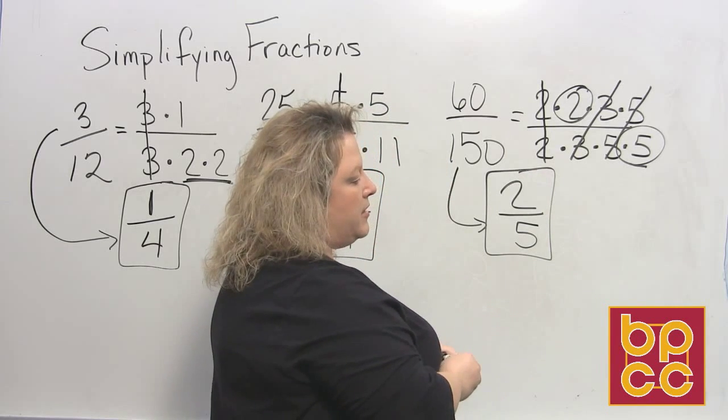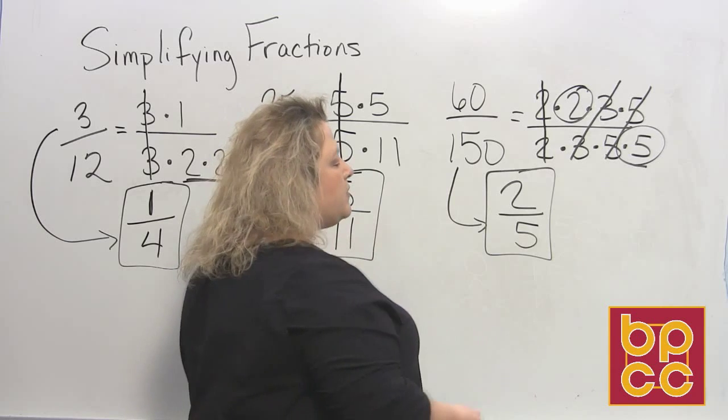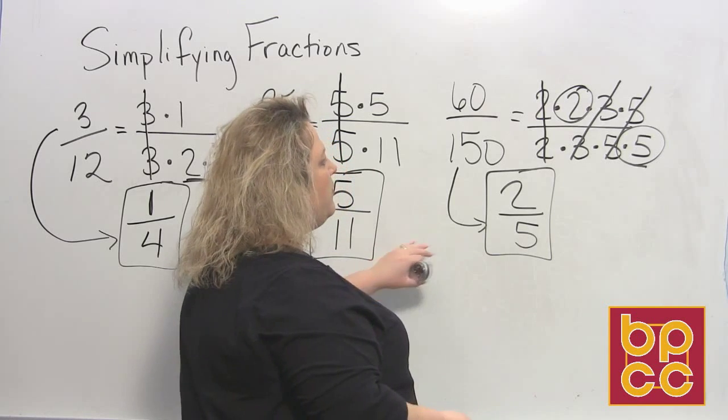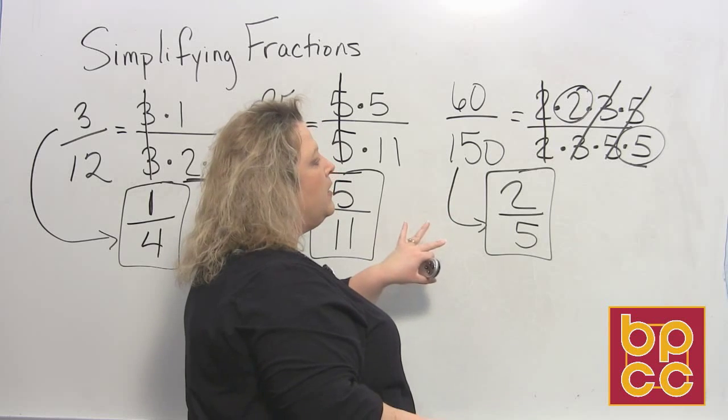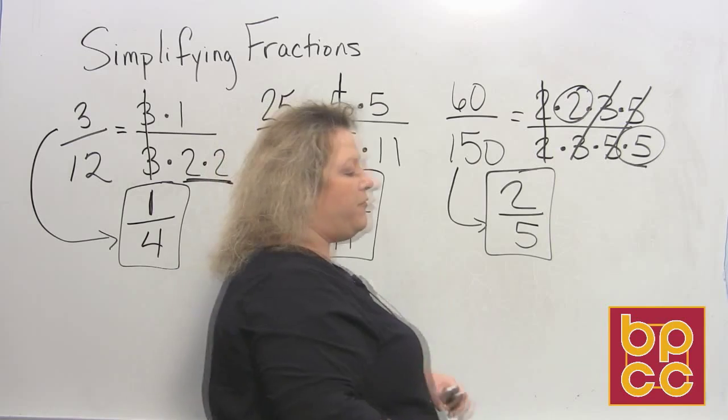And doing prime factorization is the easiest way to do, especially the big numbers. The smaller fractions, you may know what they are, but the bigger fractions, if you do these factor trees and prime factorization, this will be the easiest way that you can do to simplify fractions.